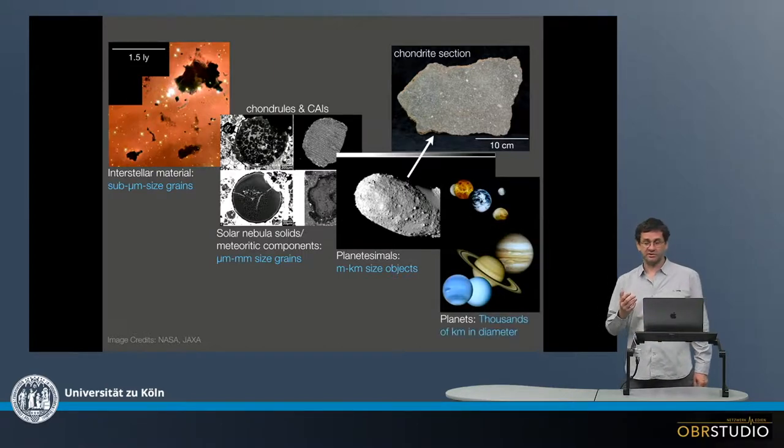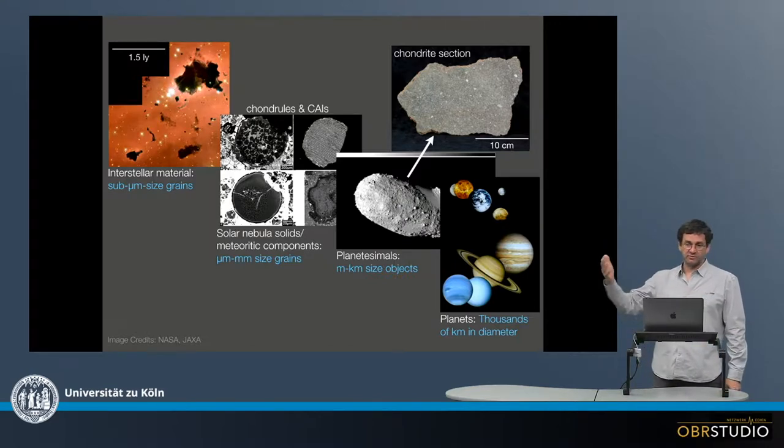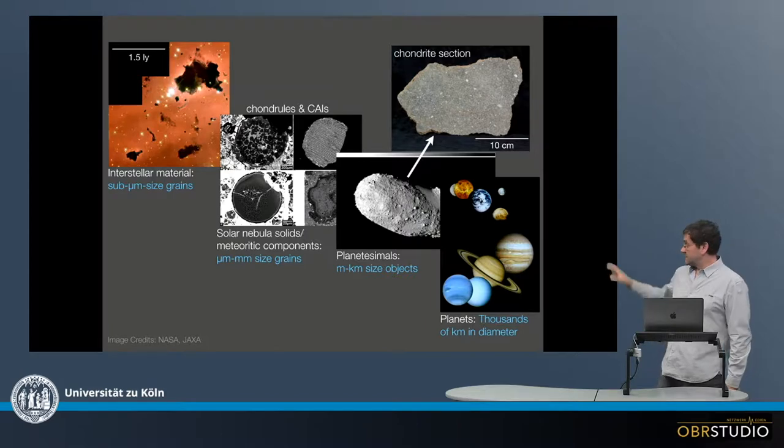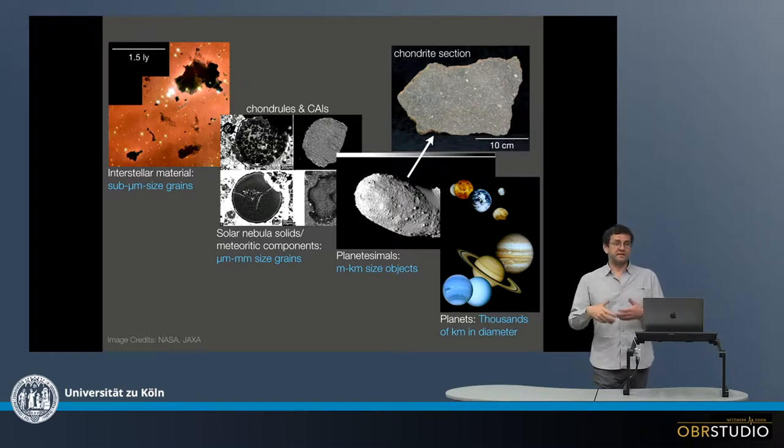Then in the last and third growth step, which then happened more or less in the debris disk or the gas of the protoplanetary disk is more or less gone, evaporated. And in this last and third growth step, the asteroids then collide and agglomerate into thousands of kilometer-sized planets.